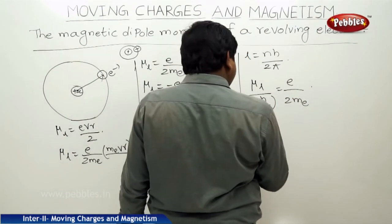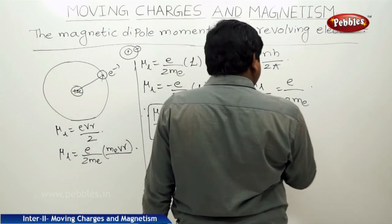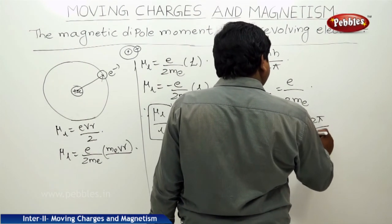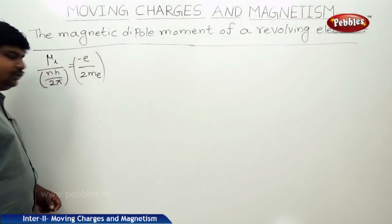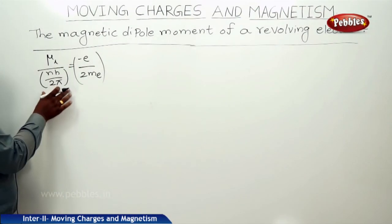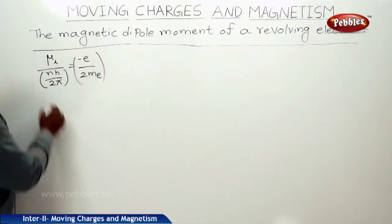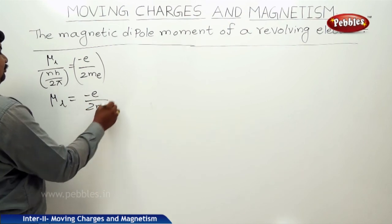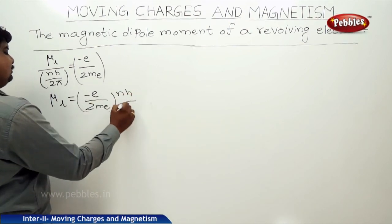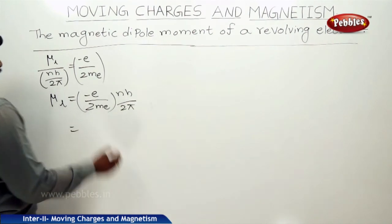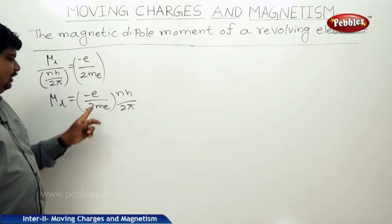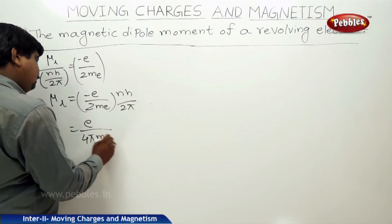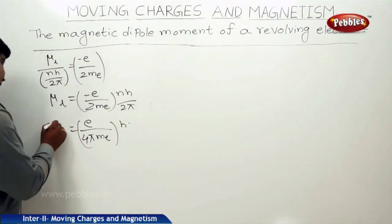Rearranging, mu_L equals (E / 2Me) times (2π / N·h), which simplifies to mu_L equals E·h divided by 4π·Me. This is the expression for the minimum magnetic moment.